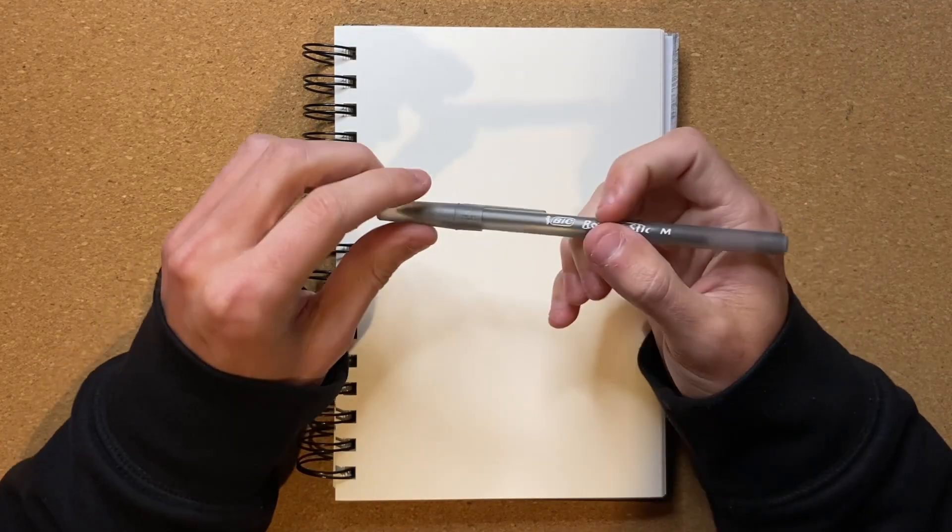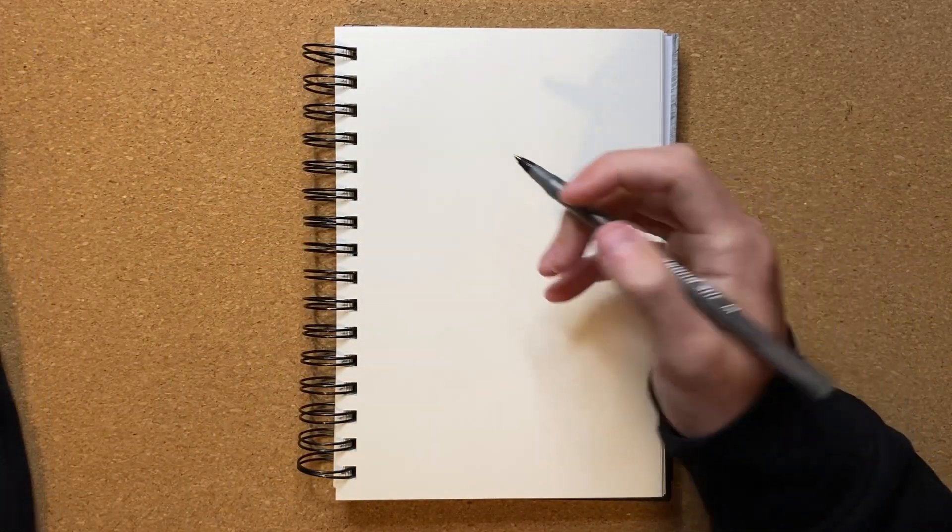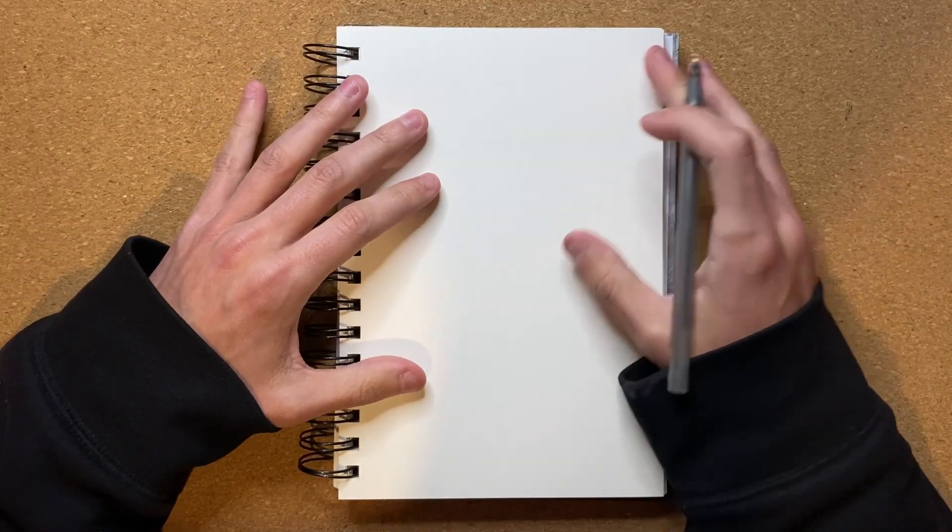So now that I'm on the nearest open page, let's just make sure this is all centered. It's cold in my room, and my nose is dripping. Just make sure I get all that off. And now, without further ado, let's go ahead and get the cap off of my pen. And let's go ahead and, first off, draw the head of this character.